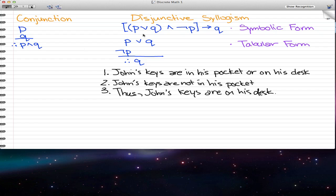Disjunctive syllogism is more detailed in this case. We have P or Q, and not P, and that implies Q. That is the symbolic form, and this is its own self in its tabular form.